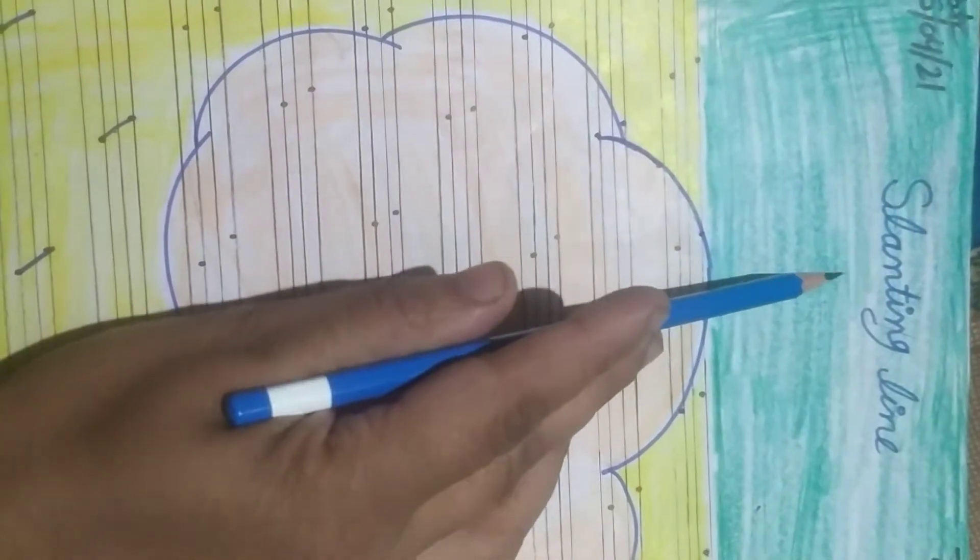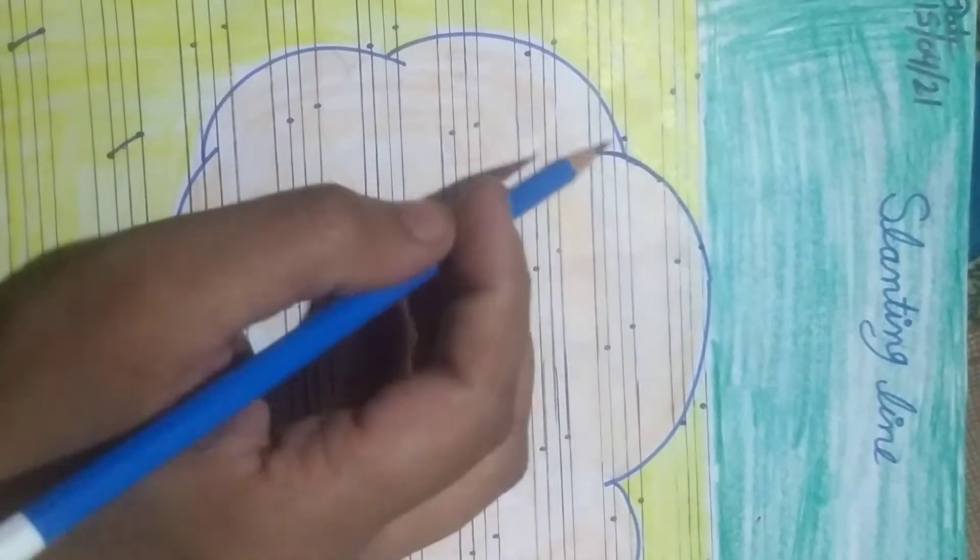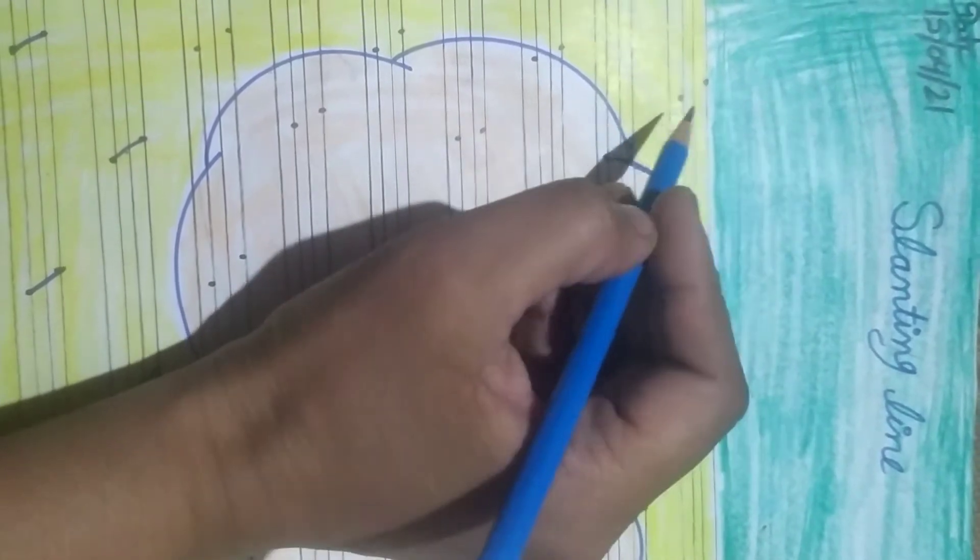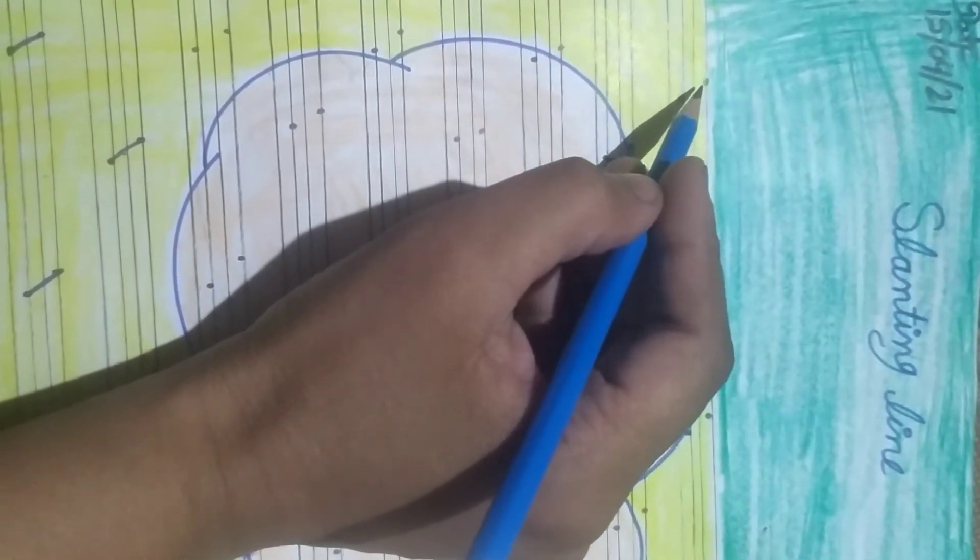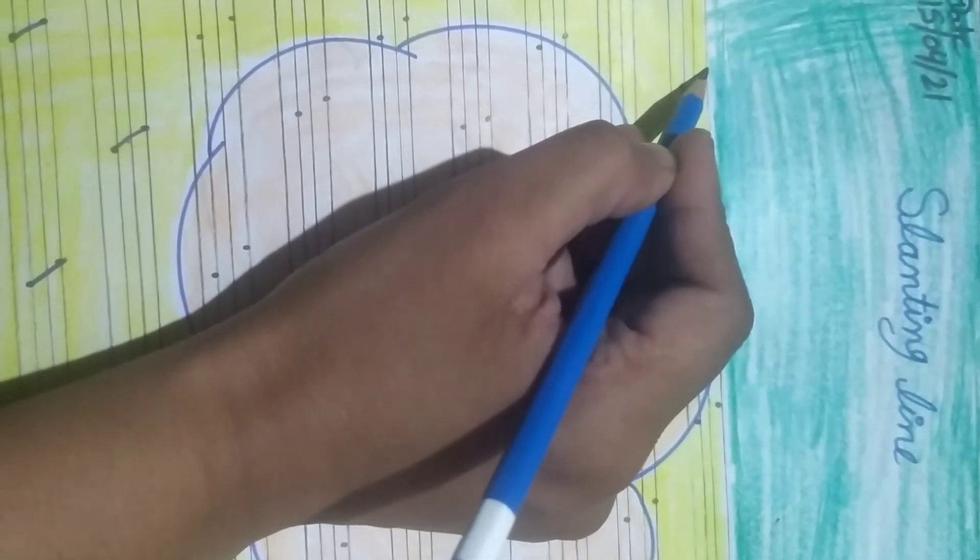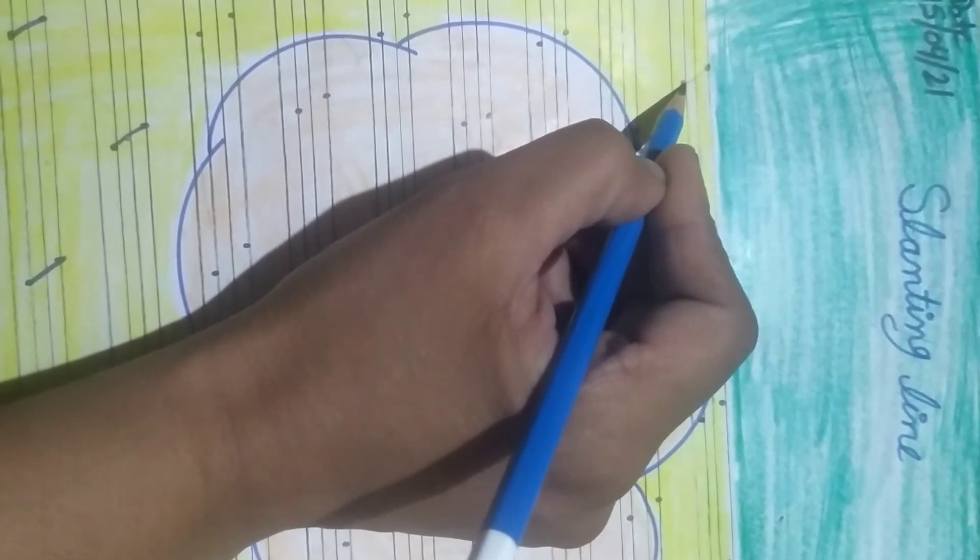So let's start slanting line. Slanting line कैसे होती है? यह देखिए, टेड़ी लाइन जो होती है, तिर्ची लाइन उसको बोलते हैं slanting line. यह dot है और यह dot है. इस dot को ऐसे touch करना है.